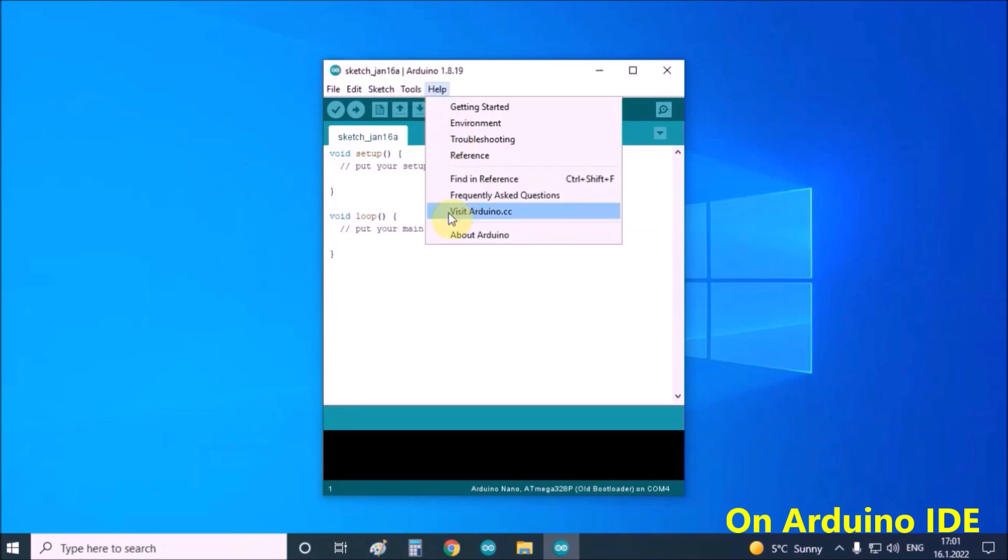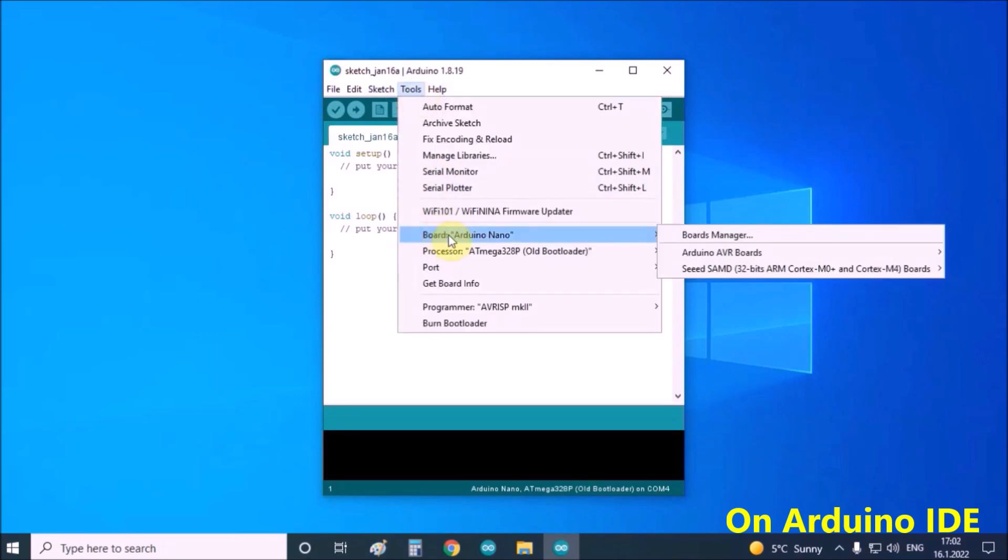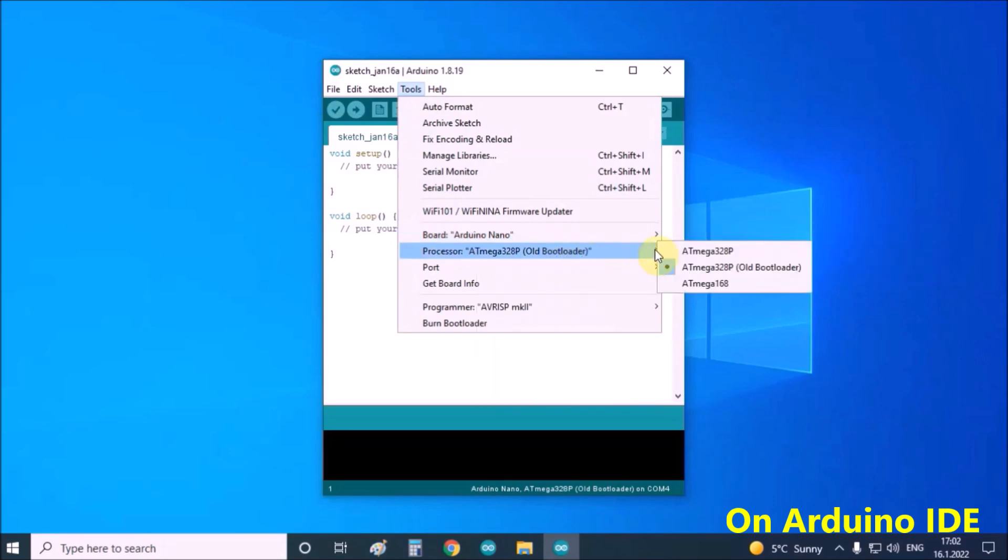Now in the Tools, Boards menu, we need to choose Seeed Studio WIO Terminal.